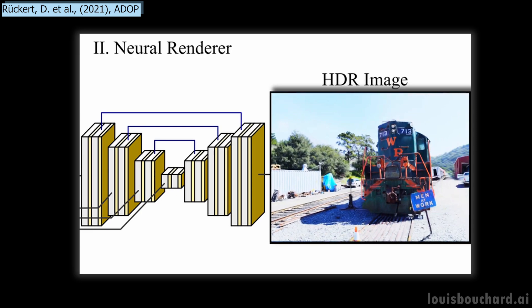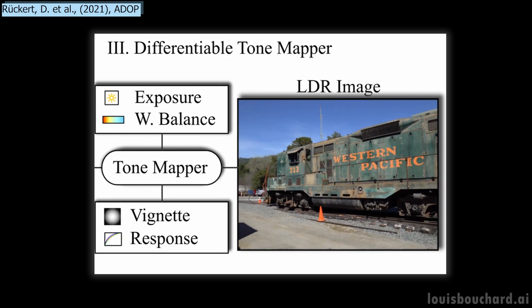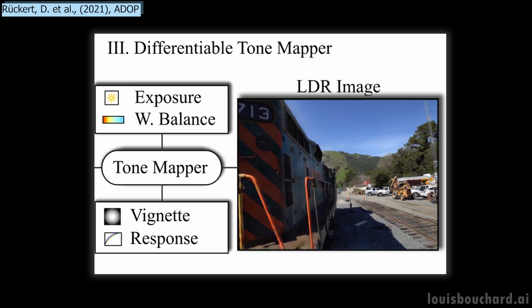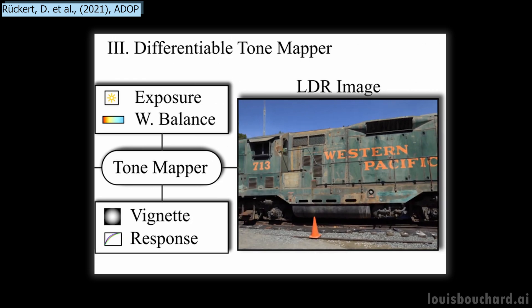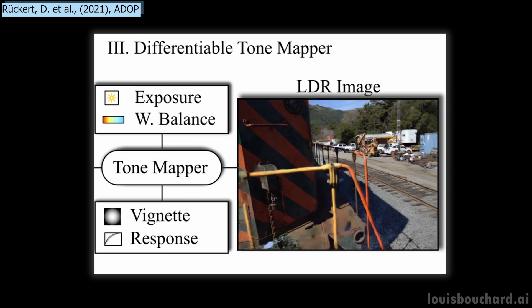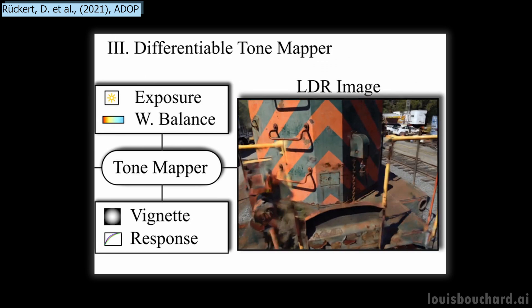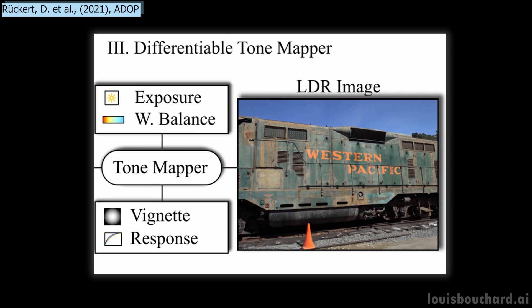A third and final module, the Tone Mapper, is introduced to take this broader range and learn an intelligent transformation to fit the 8-bit encoding better. This module aims to take these HDR Novel Images and transform them into LDR images covering the whole scene — our final outputs. The LDR, or Low Dynamic Range, images will look much better with traditional image encodings. This module basically learns to mimic a digital camera's physical lens and sensor properties to produce similar outputs from our previous real-world-like images.